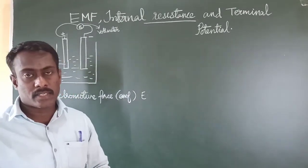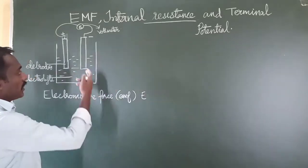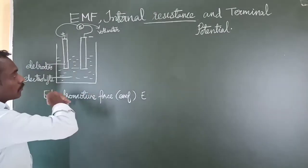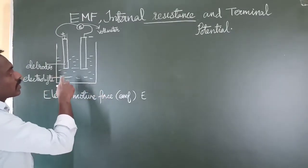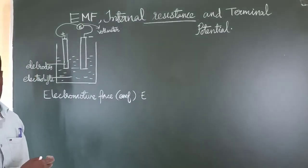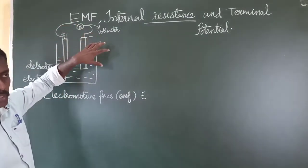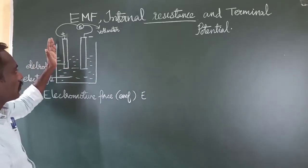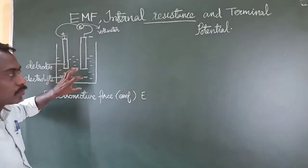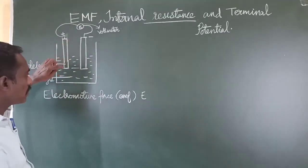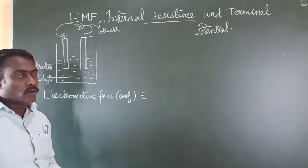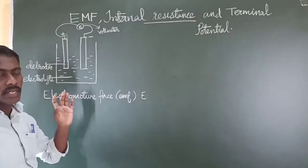Another term related to the cell is internal resistance. The electrodes and the electrolyte are all components of a cell. The resistance provided by the components of a cell when an electric current flows through it is known as the internal resistance of a cell. When the battery is connected to a circuit, electric current flows between the electrodes, and these components — positive electrode, negative electrode, and electrolyte — naturally provide resistance against the flow of current. That resistance is known as internal resistance.